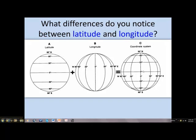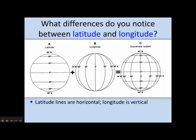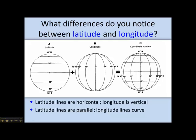But in terms of what differences that you notice, there are several here. One thing is that latitude lines are horizontal. So the latitude lines go across the globe this way. Longitude lines are vertical. And that creates some interesting other consequences here. Latitude lines are parallel to one another. Notice they're exactly parallel. But the longitude lines curve. They meet actually two points in the north and the south poles.